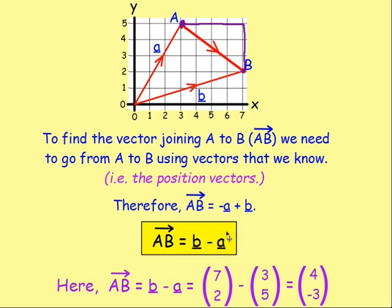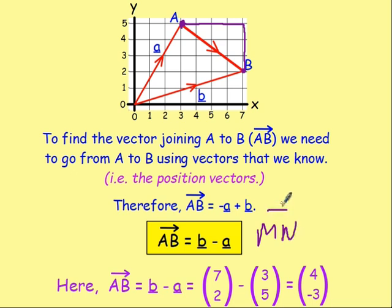Using the position vectors, just remember this part here. If you work out AB, it's B take away A. It's always the second minus the first. So if you wanted to work out MN, in order to work that out, what would you do? It would be the second, so N, take away M. Well done. It would be N take away M. So it's always the second take away the first.